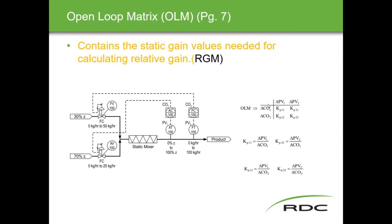So kp11 is the change in PV1 over the change in CO1. kp21 is the change in PV2 over the change in CO1. The first digit is tied to the PV, the second digit is tied to the CO — that's how the formulas work. For example, kp12 is PV1 over CO2, and kp22 is PV2 over CO2.